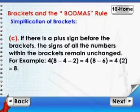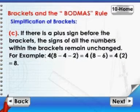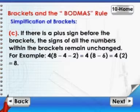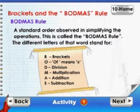4 open bracket 8 minus 4 minus 2 close bracket, is equal to 4 open bracket 8 minus 6 close bracket, which is equal to 4 open bracket 2 close bracket, which is equal to 8. BODMAS Rule: a standard order observed in simplifying the operations is called the BODMAS rule.